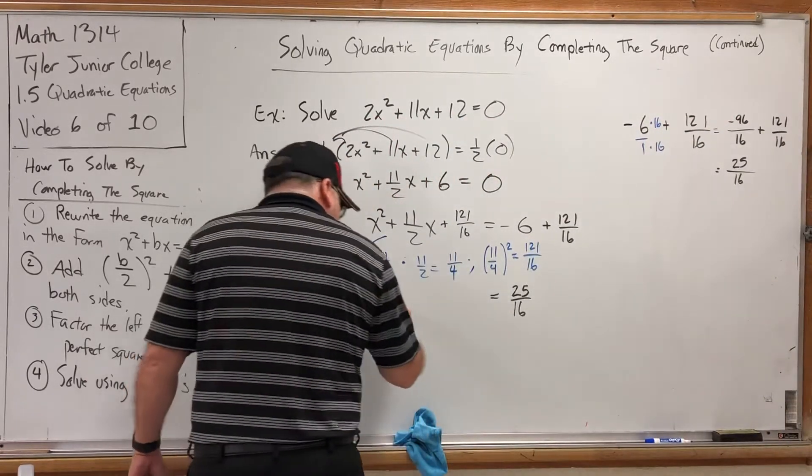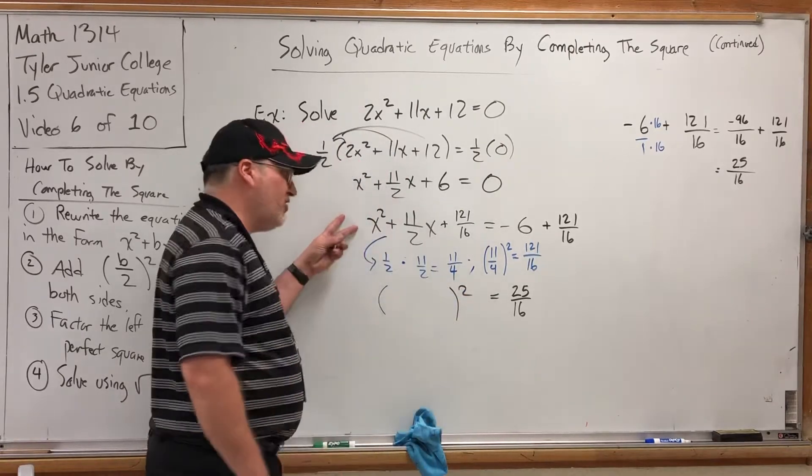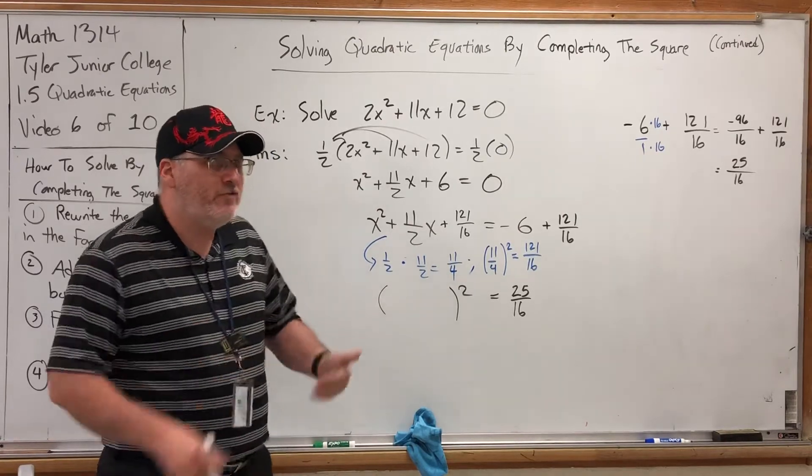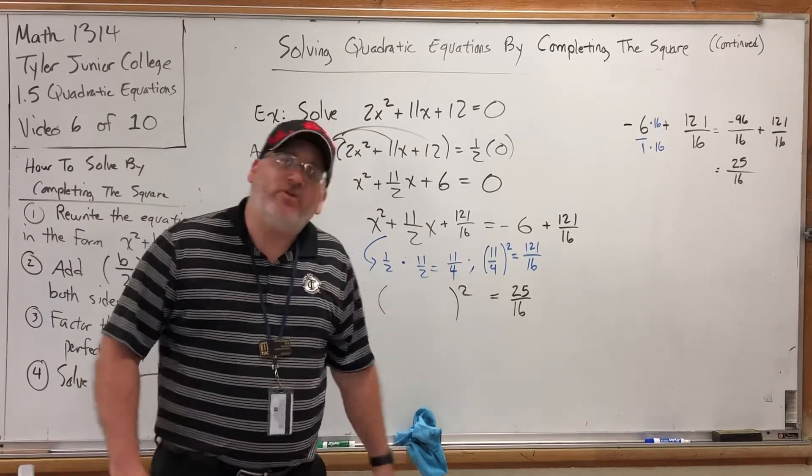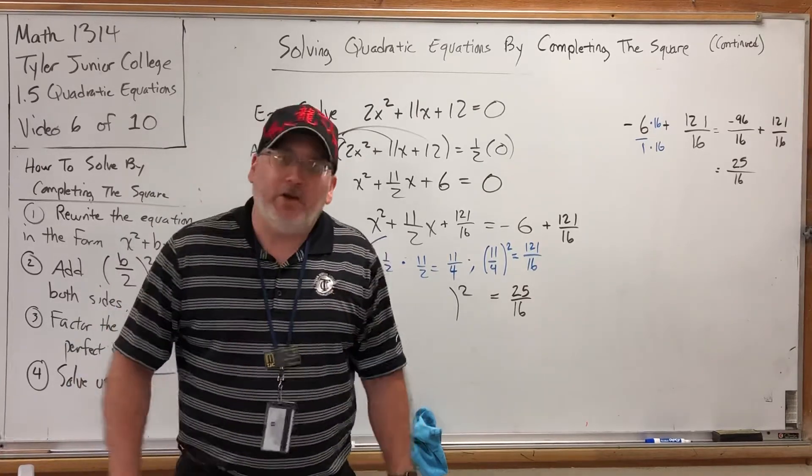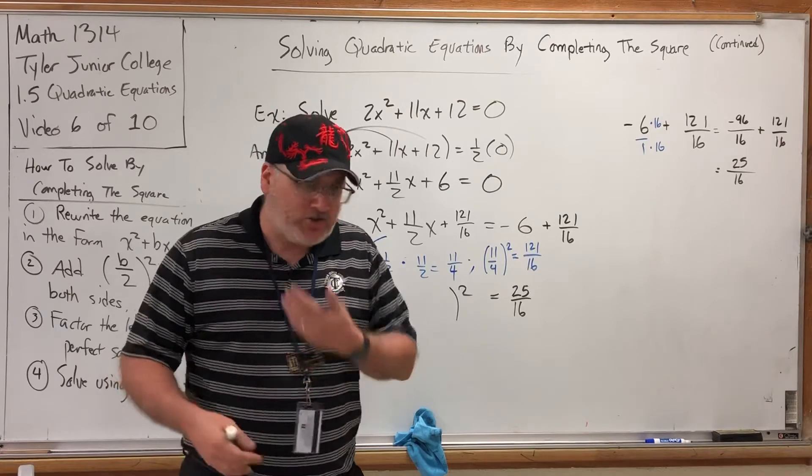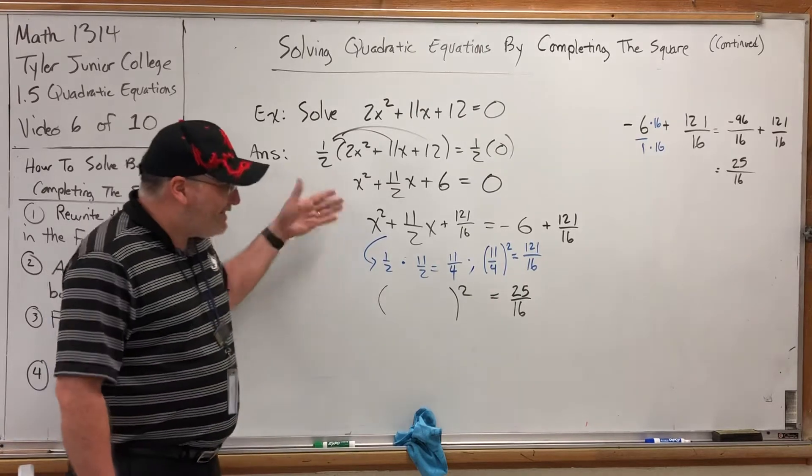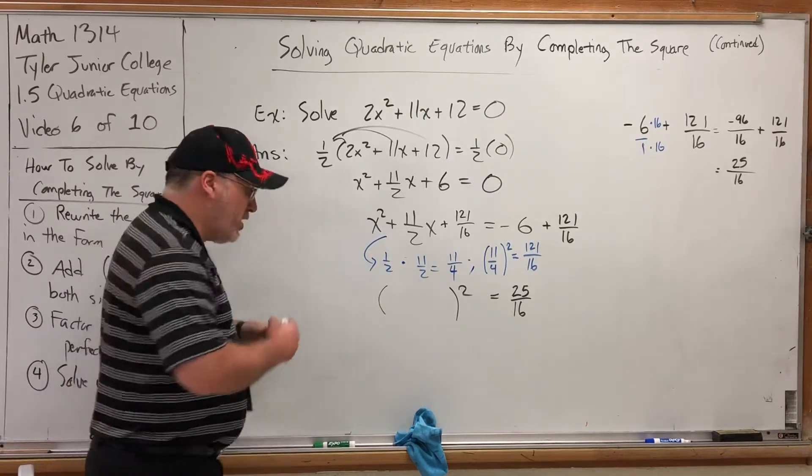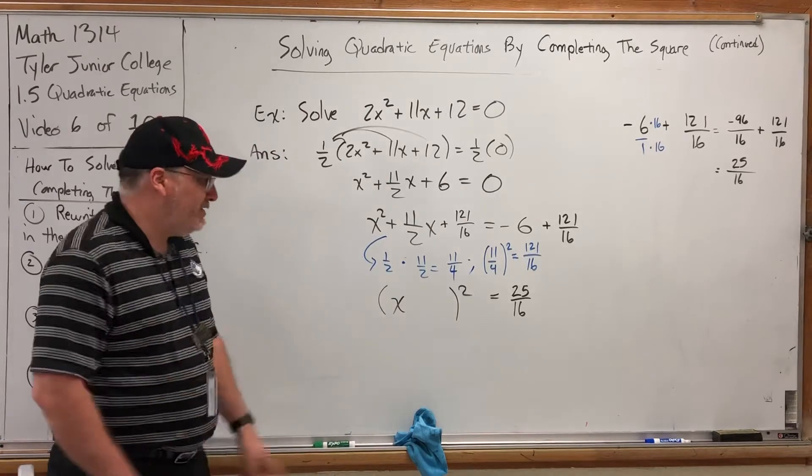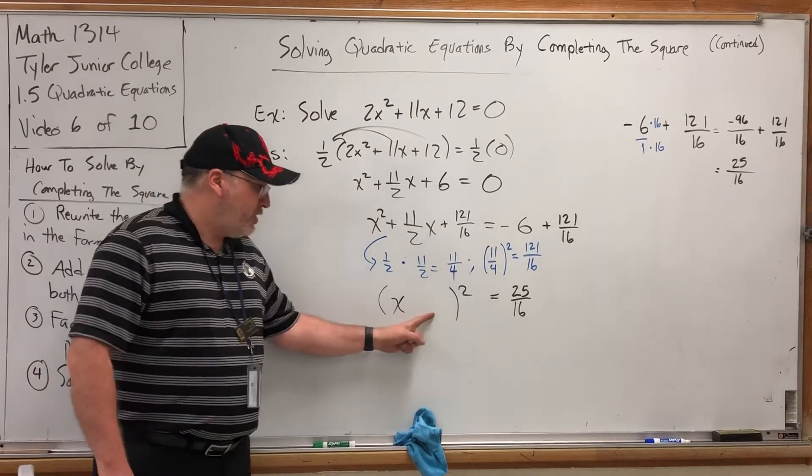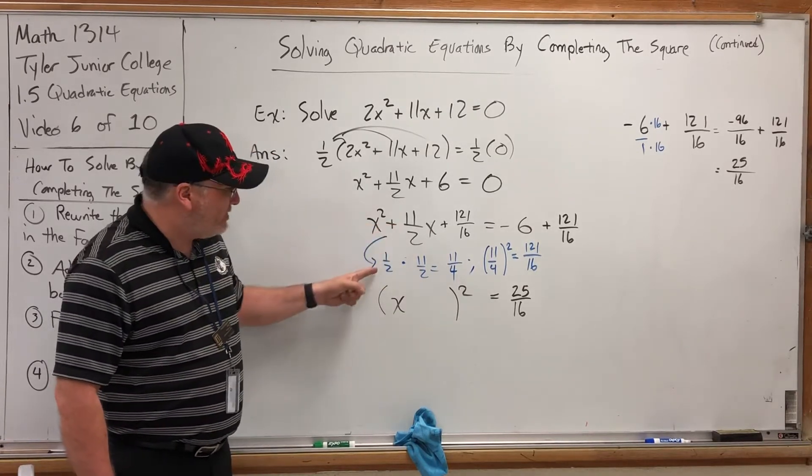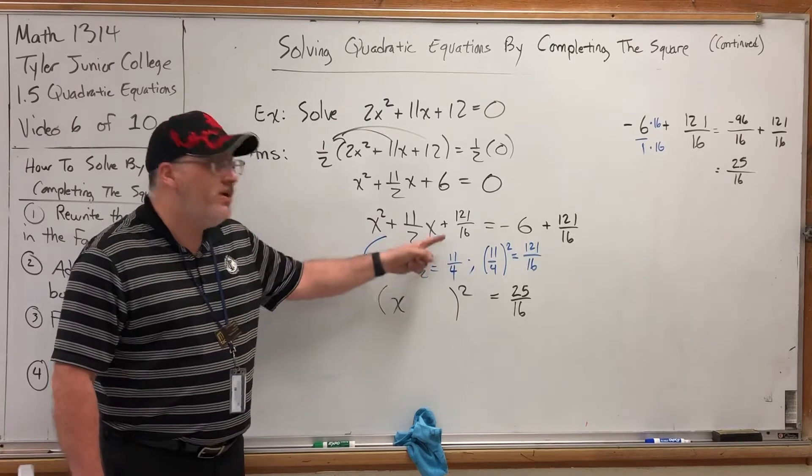But we're not out of the woods, not by far, because we have to factor this monstrosity on the left that contains not one but two fractions. Now, under most circumstances, you would never be asked to factor using fractions. It goes back to the thing I showed you earlier about being an infinite number of ways to multiply to get a certain product when fractions are involved. But this is not an ordinary factorization. We set this up to factor into a perfect square.